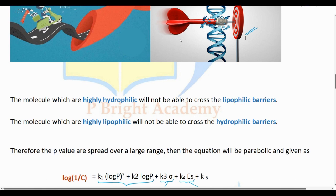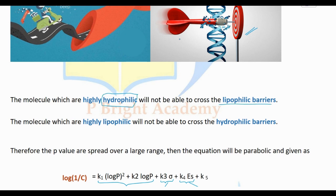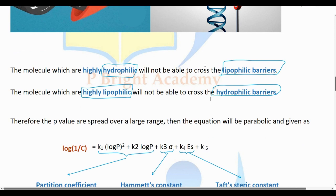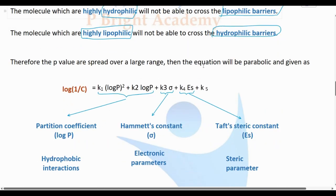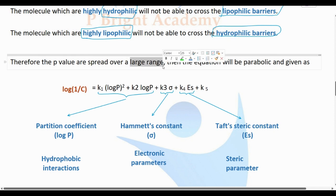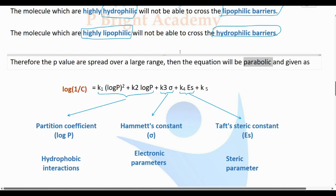A highly hydrophilic drug cannot cross the lipid barrier, and a highly lipophilic drug cannot travel through water-based environments. The drug should have an optimum value of lipophilicity. Over a larger range, we get a parabolic graph rather than a straight line.